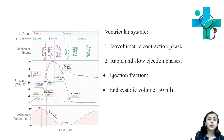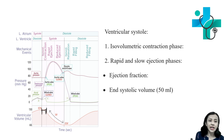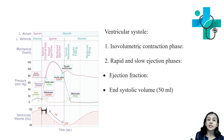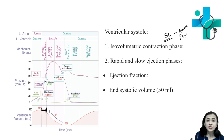Next is ventricular systole. When ventricles are contracting, the first phase is isovolumetric contraction period. Both valves are closed and ventricles are contracting as a closed cavity, so there is no change in volume. At the end of isovolumetric contraction period, there is opening of the semilunar valves — aortic and pulmonary valves. When these valves open, there is ejection of blood during rapid and slow ejection phases.